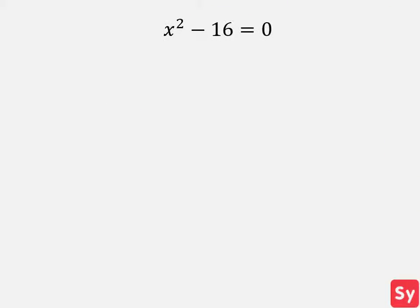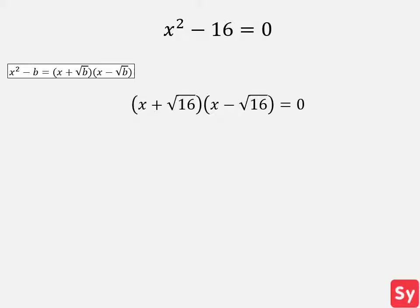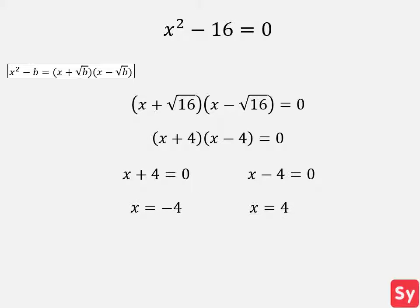Next example, we have x squared minus 16 equals zero. Instead of following the standard method for factoring quadratics, we can use a little trick — the difference of squares identity. This makes factoring quicker and easier. Using this identity, we get x plus the square root of 16 times x minus the square root of 16 equals zero. We simplify to get x plus 4 times x minus 4 equals zero. Setting each factor equal to zero, we get x equals negative 4 and x equals 4 as our answer.